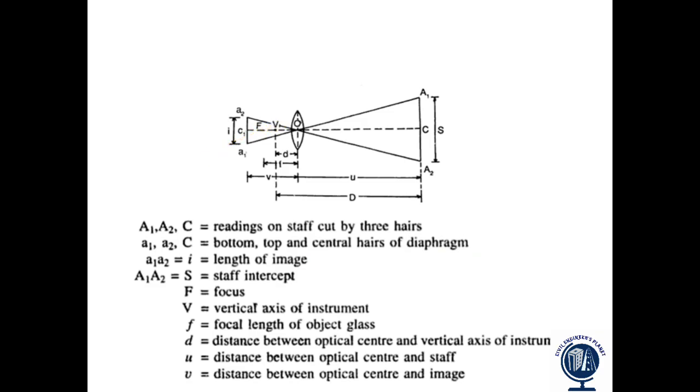Here I is the length of the image, S is the staff intercept, F is the focus. V is the vertical axis of the instrument, small f is the focal length of the object glass. Small d is the distance between the vertical axis of the instrument and the optical center, small u is the distance between optical center and the staff, small v is the distance between optical center and the image. So these were the terms.